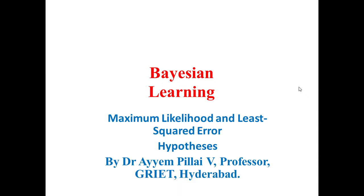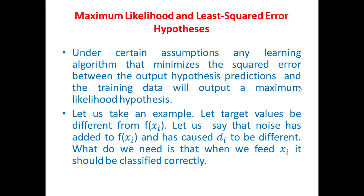In this video, as part of Bayesian learning, let us see how to get a hypothesis based on the maximum likelihood concept and least squared error concept under certain assumptions. Any learning algorithm that minimizes the squared error between the output hypothesis predictions and the training data will output a maximum likelihood hypothesis.